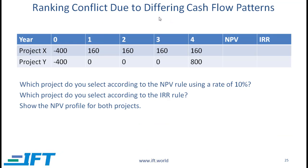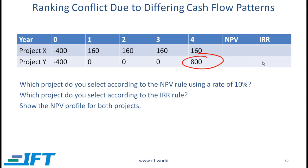Ranking conflict due to differing cash flow patterns. Consider two projects, X and Y. For project X, we have a fairly stable cash flow over a four-year period, whereas for project Y, we have the money coming at the end. So clearly the cash flow pattern is different. Come up with the NPV and IRR for project X and then the NPV and IRR for project Y.